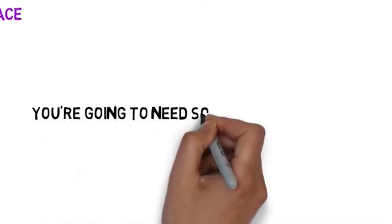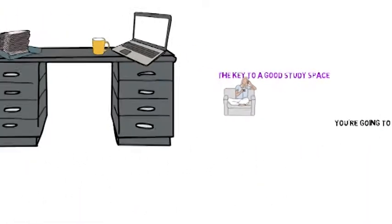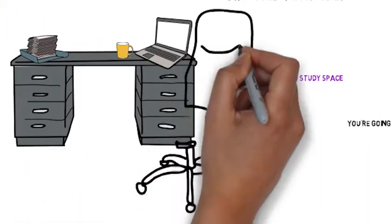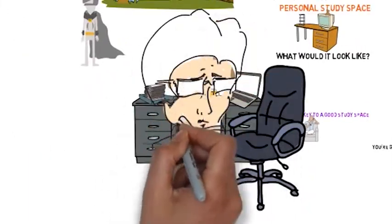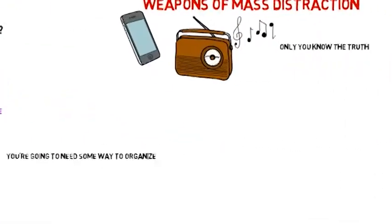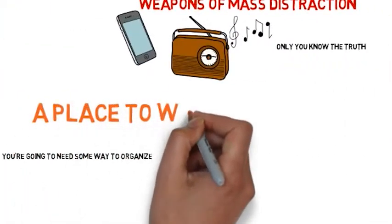You're going to need some way to organize the things you usually need for school. Paper, pens, books you might need, a folder or two to keep any hard copies that are necessary. Keep in mind, this is your study space, but it's also a place to work, not to play.